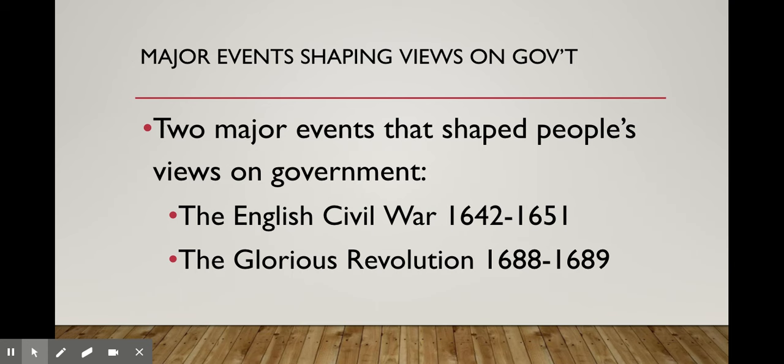There are two major events that shape people's views on government — and the people we're talking about are Hobbes and Locke. One is the English Civil War, and the other is the Glorious Revolution. The English Civil War takes place under the Stuart Dynasty. James I and then his son Charles I — Charles being the king during the English Civil War — who ends up being executed at the end.